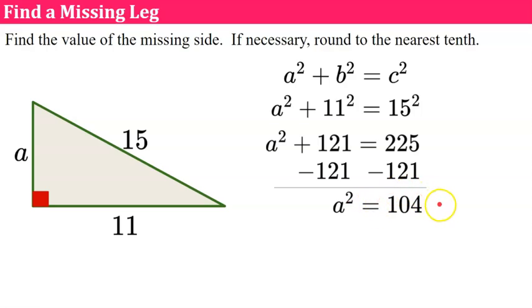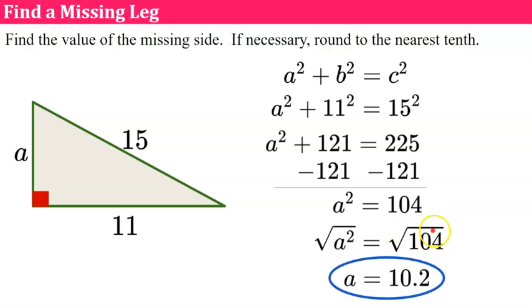So now we're going to take the square root of each side. Using our calculator, we are going to find that the square root of 104 to the nearest tenth is 10.2. So my missing side length, which is a leg, has a length of 10.2.